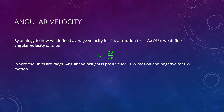Notice the parallel: instead of v equals delta x over delta t, we have omega equals delta theta over delta t. We know that we measure our angle in rotational motion in radians, and we measure time in seconds, so the units of angular velocity are radians per second — much like the units of regular velocity were meters per second.